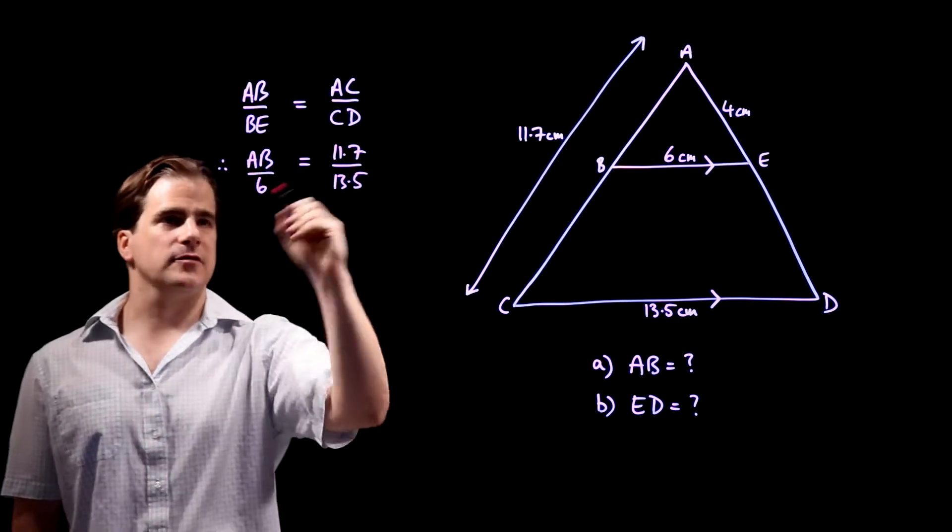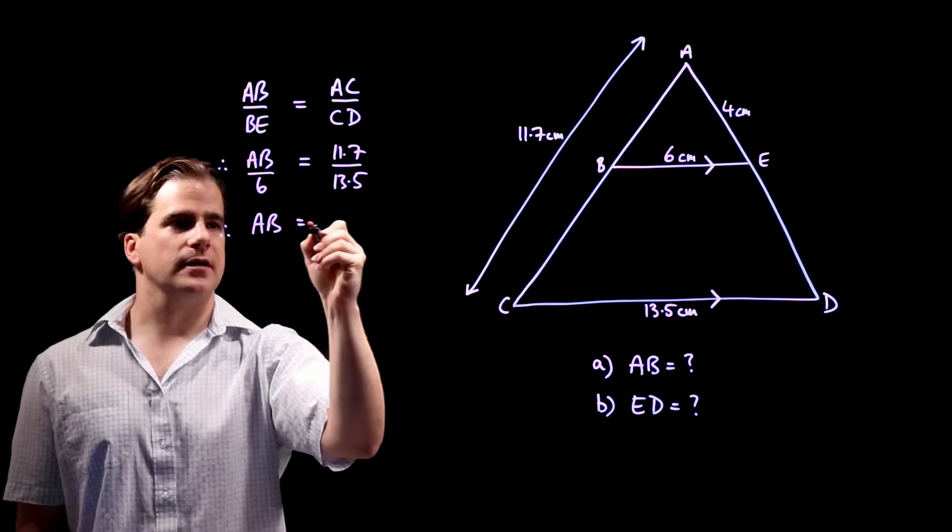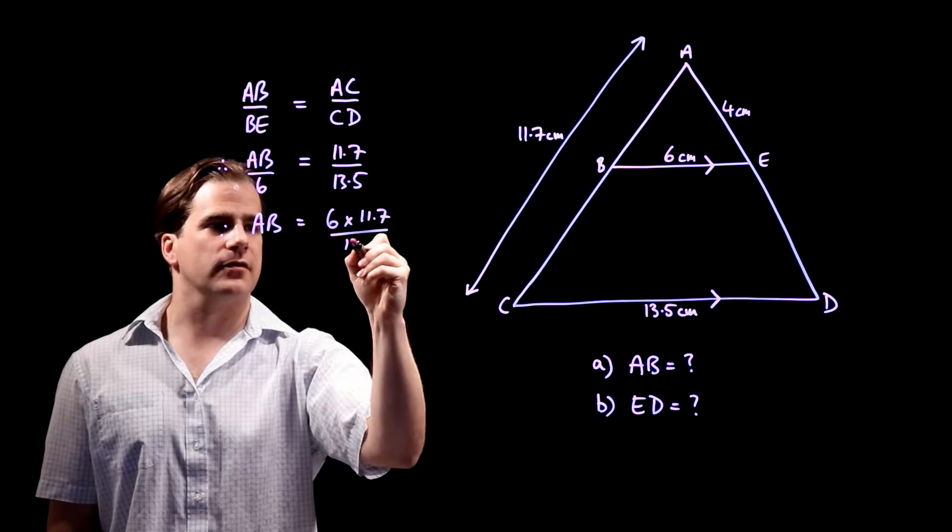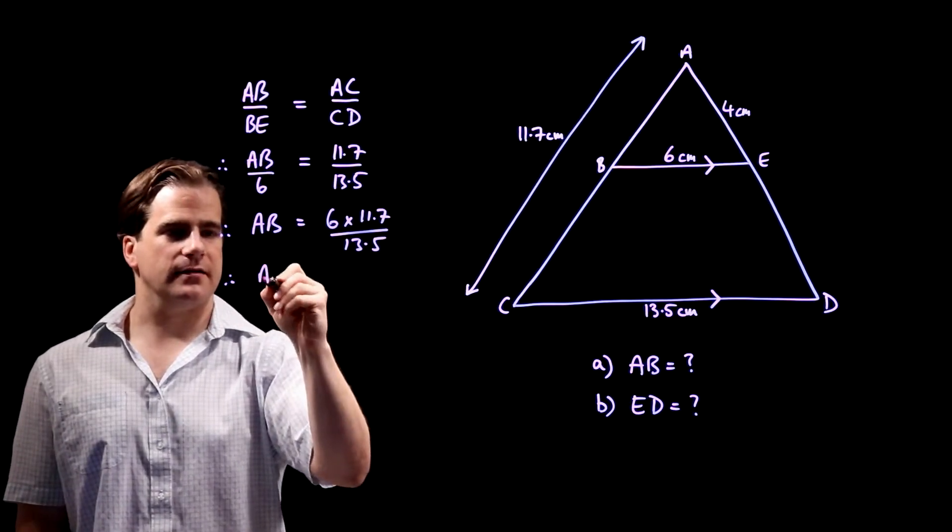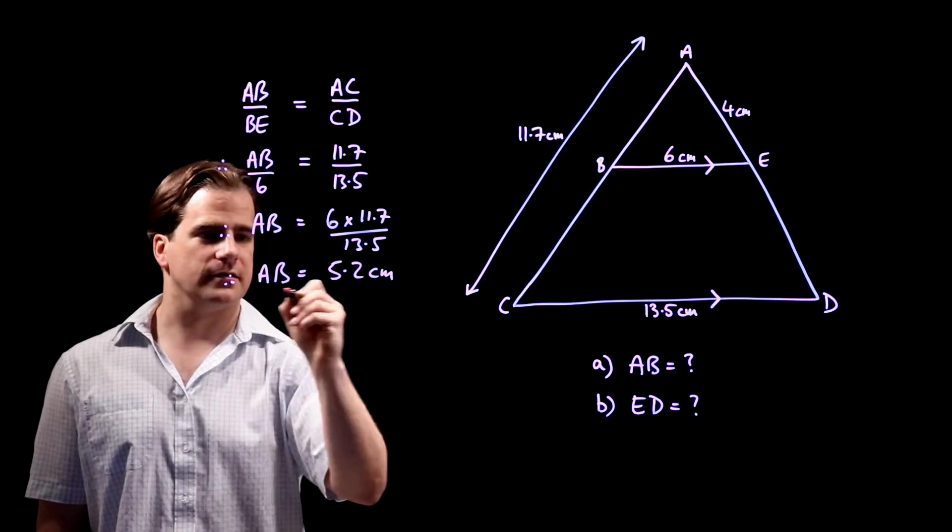Multiply both sides by 6 and you get AB is 6 times 11.7 over 13.5. Stick that in the calculator and it turns out to be 5.2 centimetres.